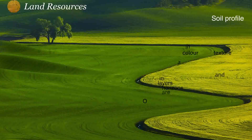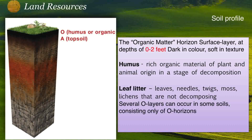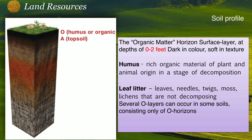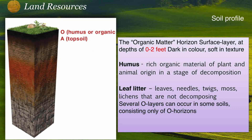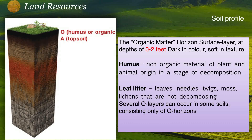The first layer is O — the humus or organic layer. This is the uppermost layer and does not contain any soil. Below that is the topsoil or A layer. These two layers mostly contain humus, which is rich organic material of plant and animal origin, and are covered with plant leaves, leaf litter, needles, twigs, or mosses. This layer extends up to two feet.